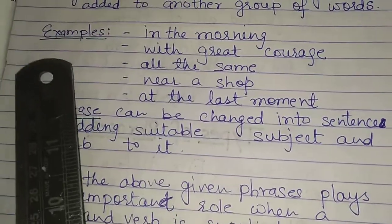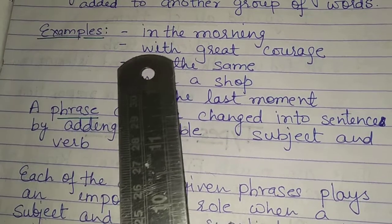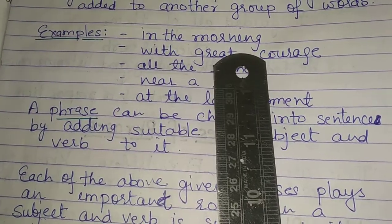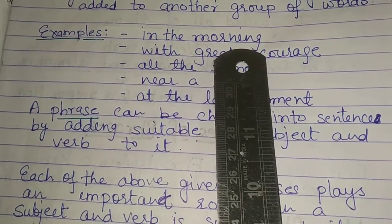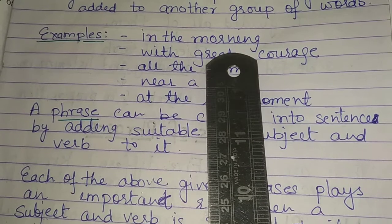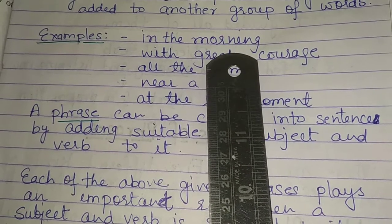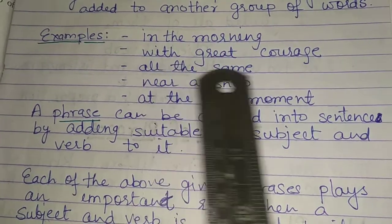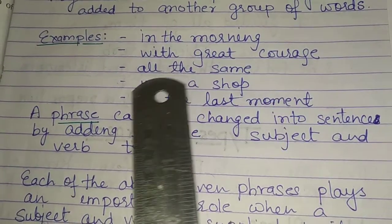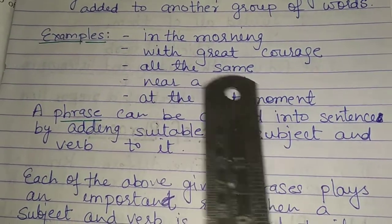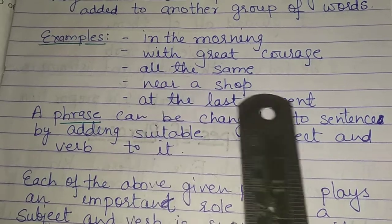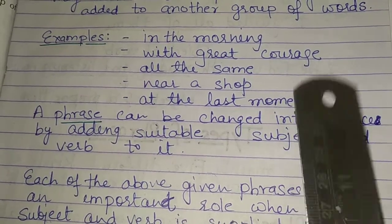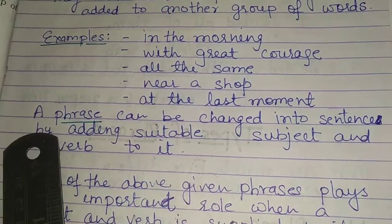For example of phrase: 'in the morning' — these group of words make meaning but not a complete sentence. 'With great courage.' 'All the same.' 'Near a shop.' 'At the last moment.'